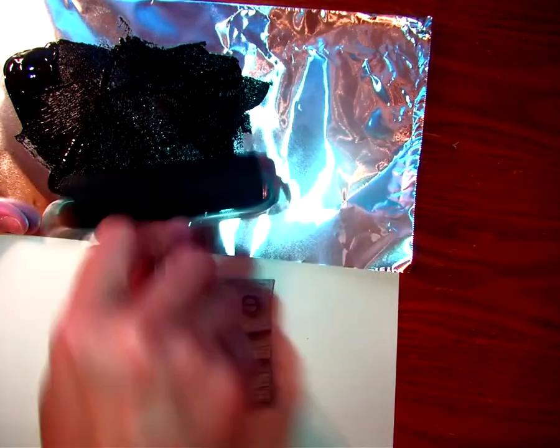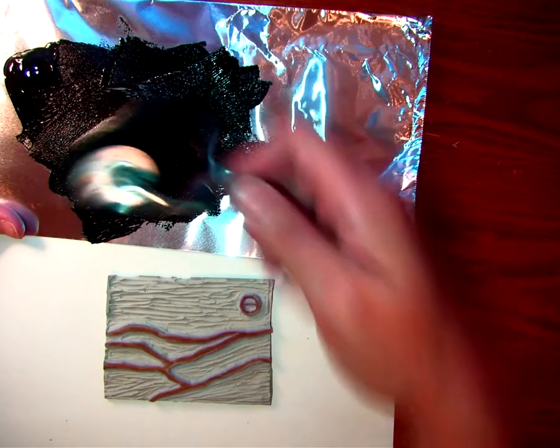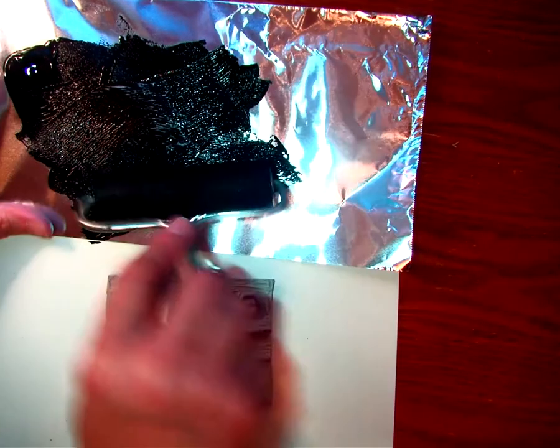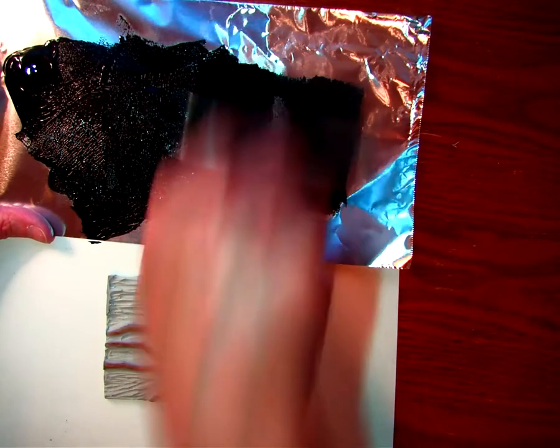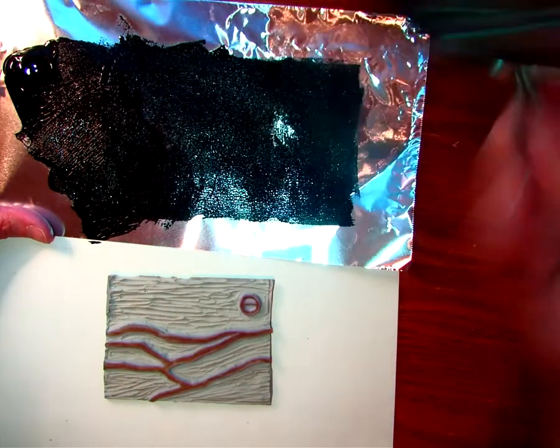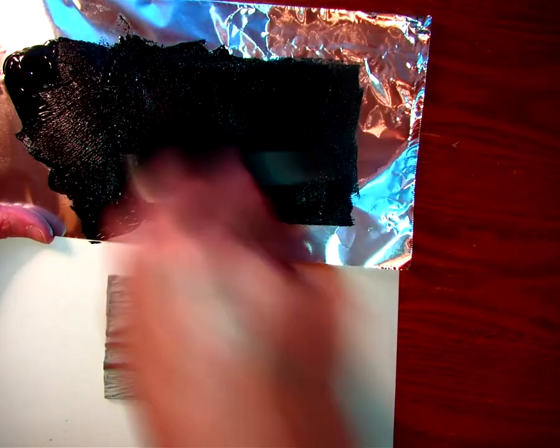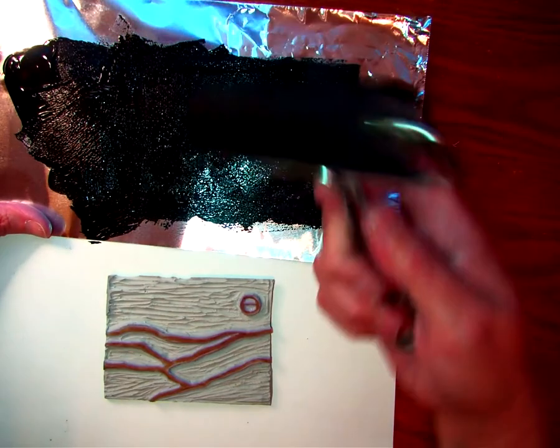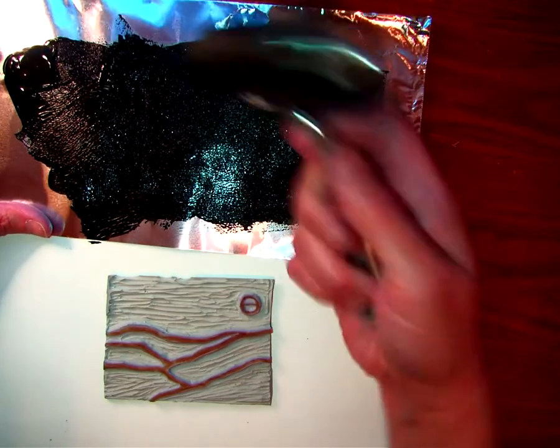Tin foil works awesome for this. We use it in the classroom. If you don't have tin foil, newspaper works great also to put paint or ink on. And the difference between ink and paint is not a big difference.